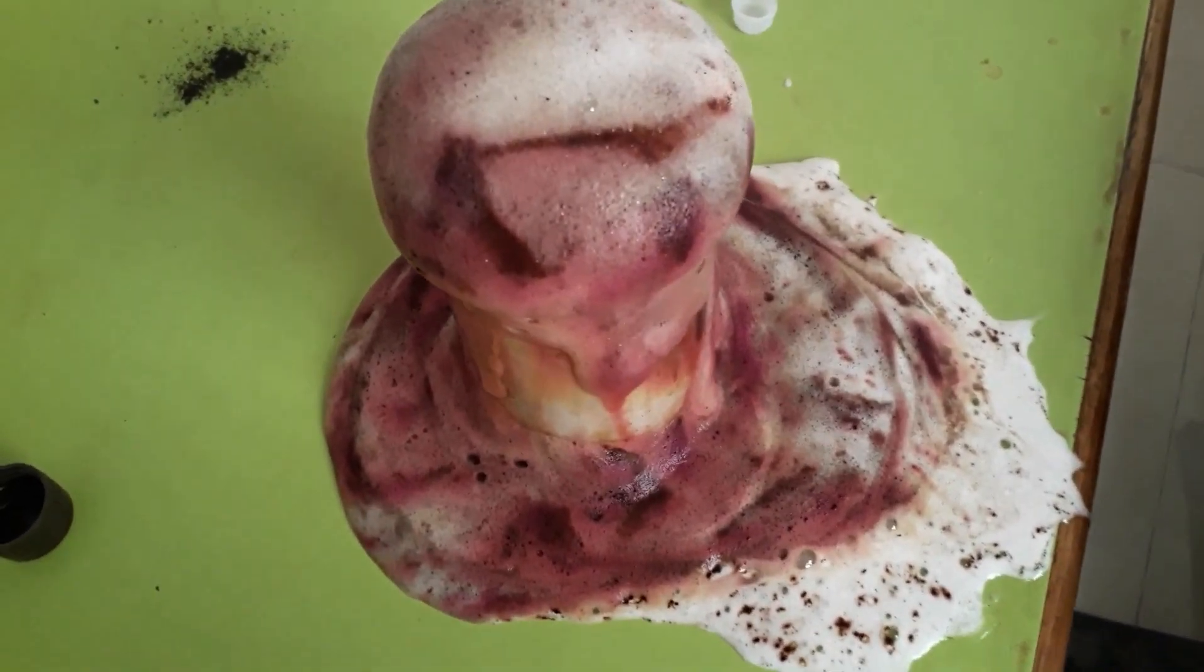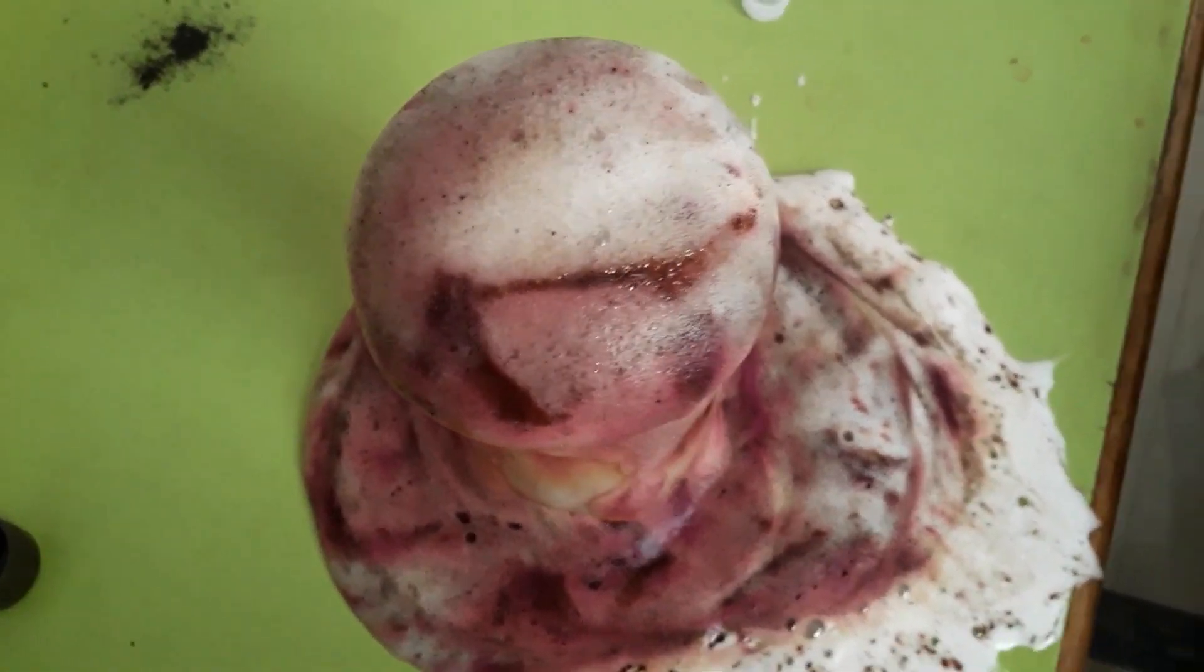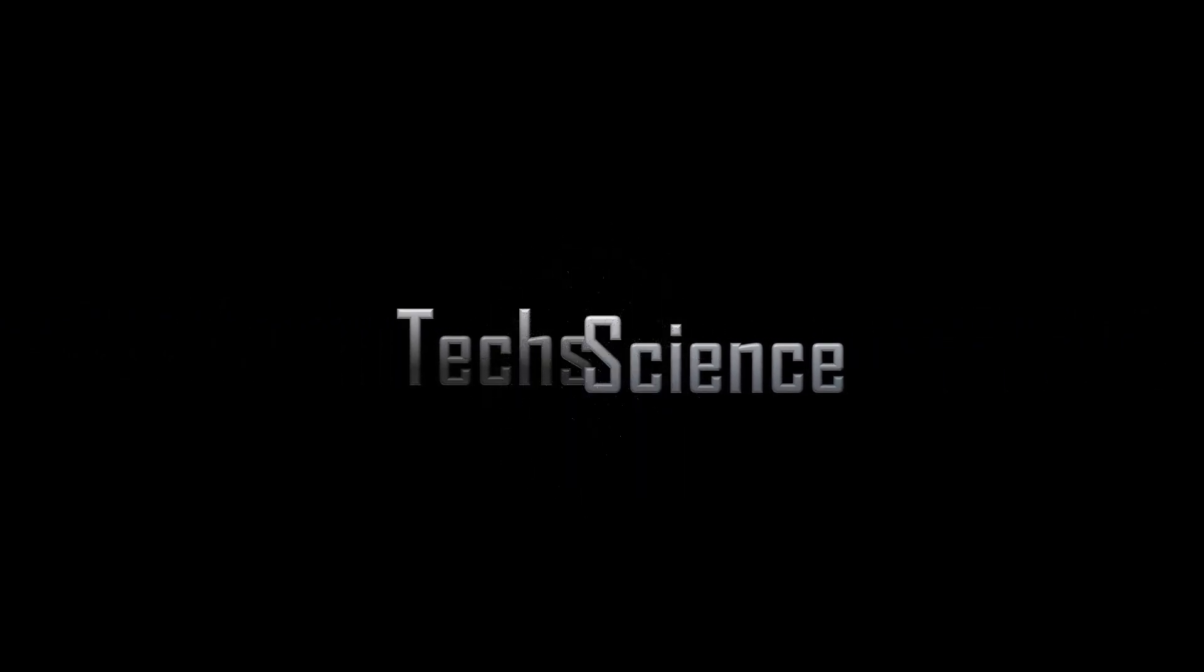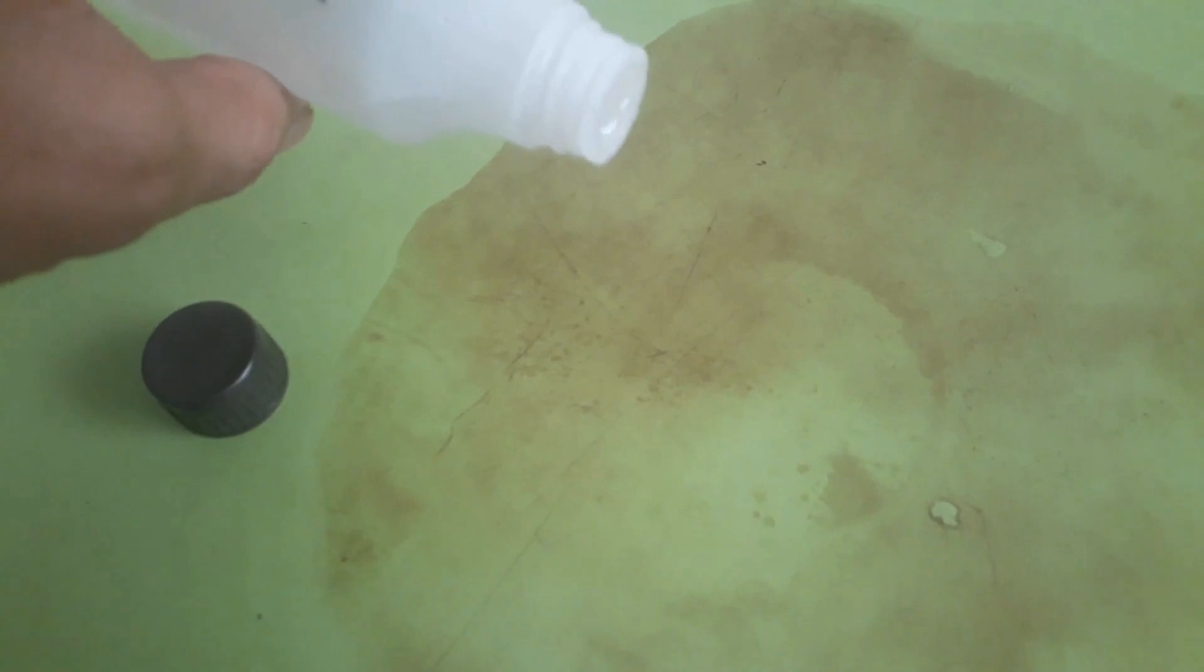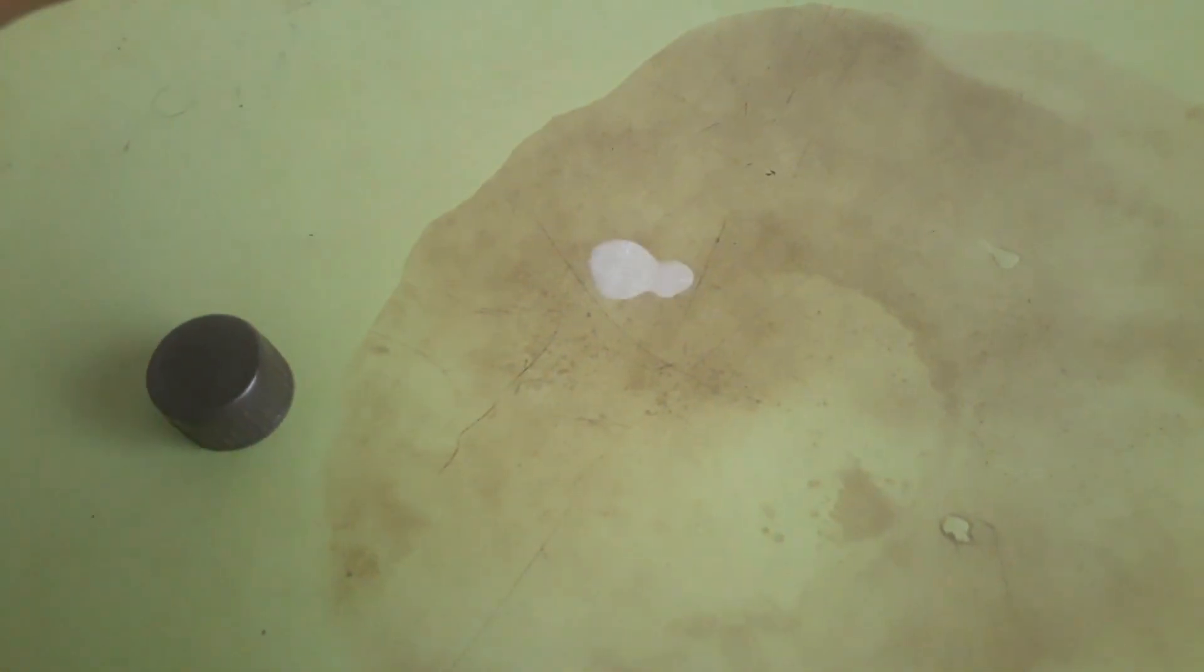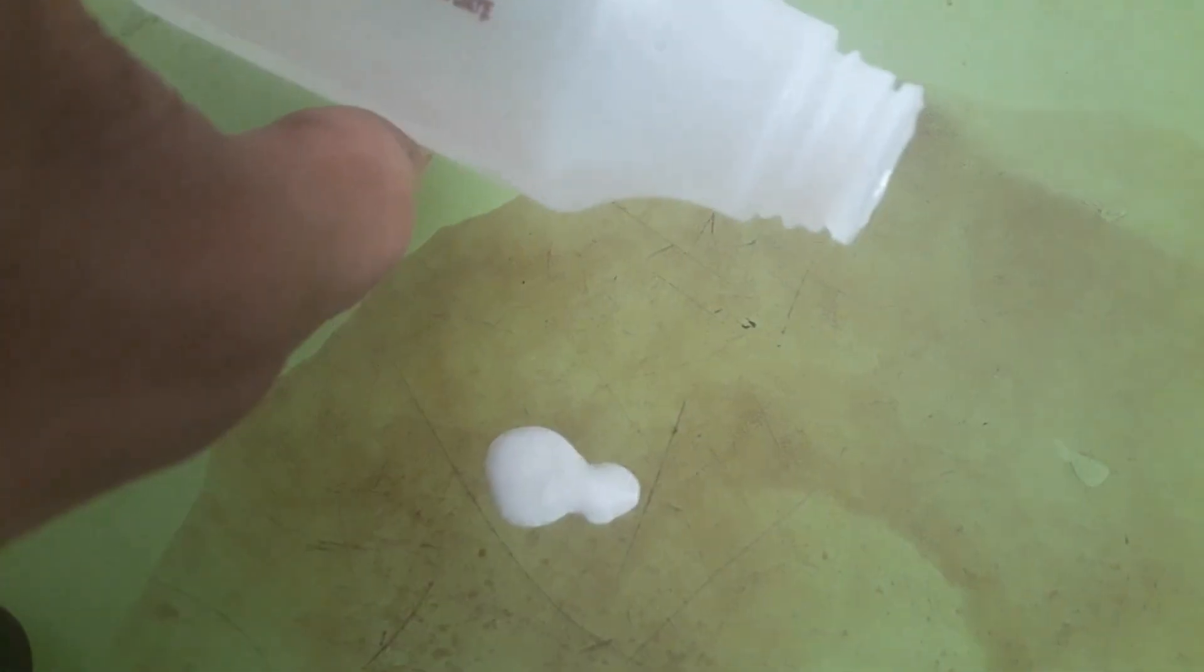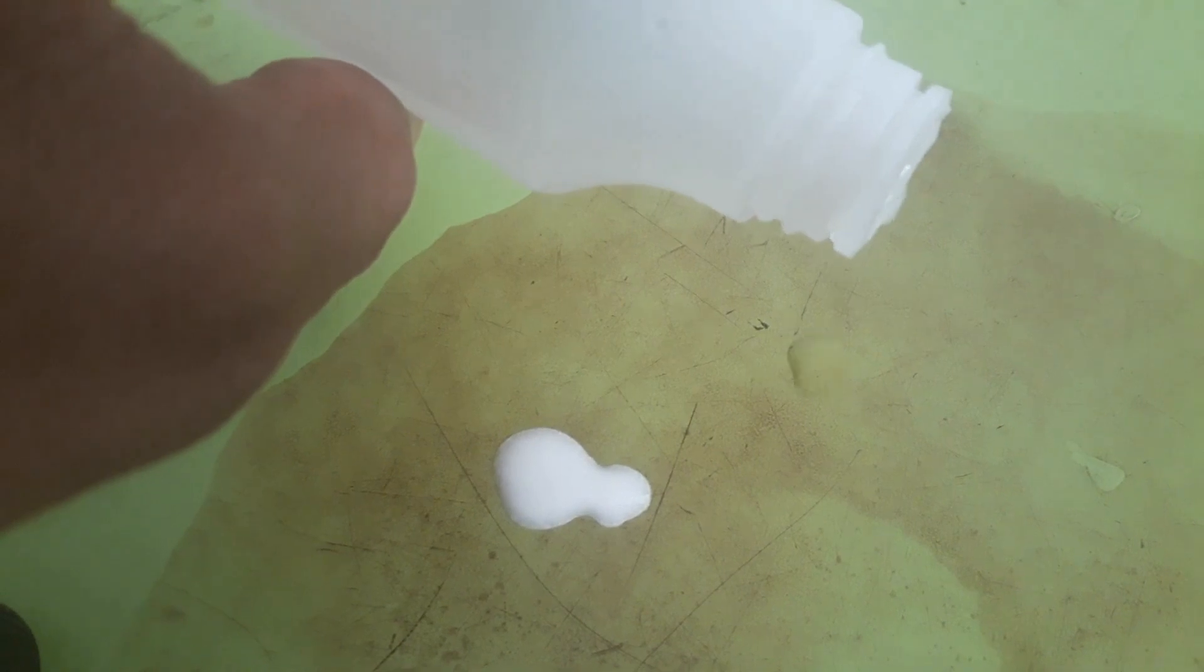This scene is from the previous video. As you have seen in the previous video, the potassium permanganate compound has been spilled out of the glass, and now when I drop hydrogen peroxide, it reacts with the stain and forms a white compound.